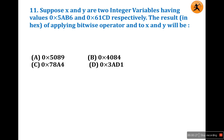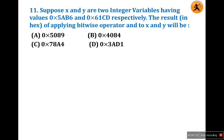Question number 11: Suppose X and Y are two integer variables having values 0x5AB6 and 0x61CD respectively. The result of applying the bitwise AND operator to X and Y will be. Here two hexadecimal numbers are given; hexadecimal numbers usually start with the 0x prefix.